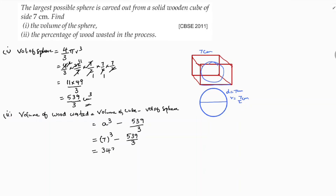7 cubed is 343, so we have 343 minus 539 by 3. Taking LCM as 3: 343 times 3 is 1029. So 1029 minus 539 equals 490. Therefore, volume of wood wasted is 490 by 3 centimeter cube.